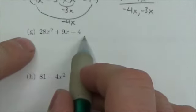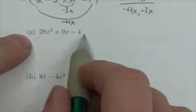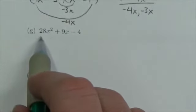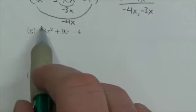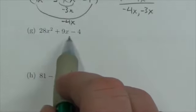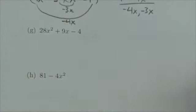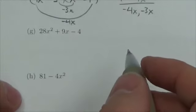Now the first thing I'm looking for here are any common factors. Well, there's no common variables there, so let's look at the coefficients. 28 has 2, 4, and 7 in it. 9 is just 3 and 3. There's nothing common between those two, so there's nothing common overall.